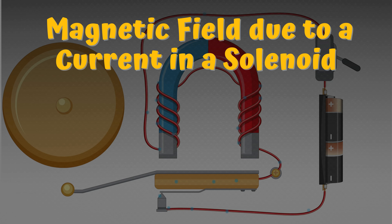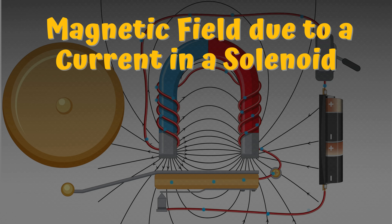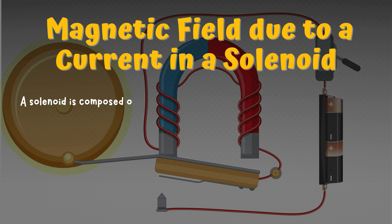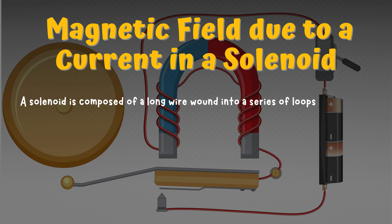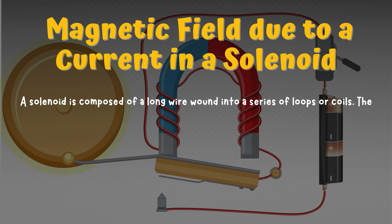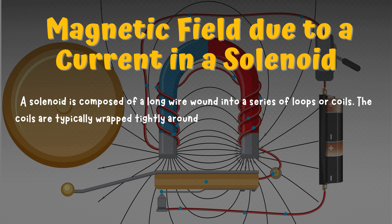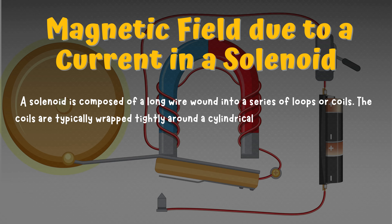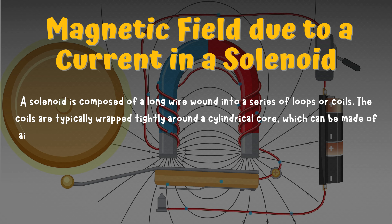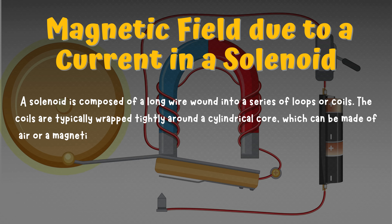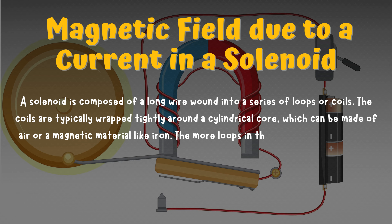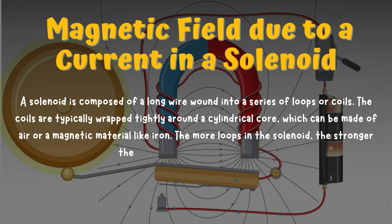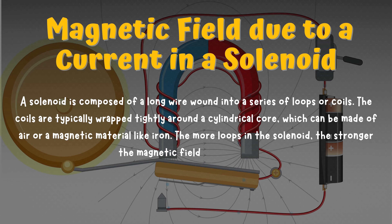Magnetic field due to a current in a solenoid. A solenoid is composed of a long wire wound into a series of loops or coils. The coils are typically wrapped tightly around a cylindrical core, which can be made of air or a magnetic material like iron. The more loops in the solenoid, the stronger the magnetic field it can generate.